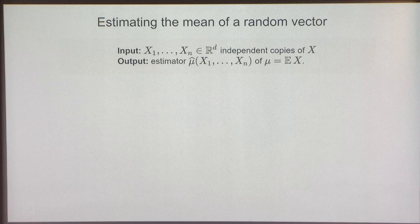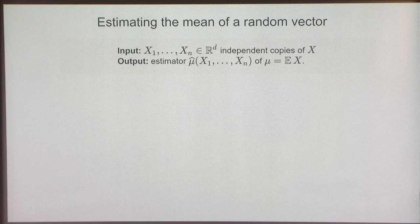The problem is the following. You get to see n samples, x1 up to xn — they're d-dimensional — and they're iid copies of some unknown random variable x. Your goal is to estimate the mean of x based on these samples.